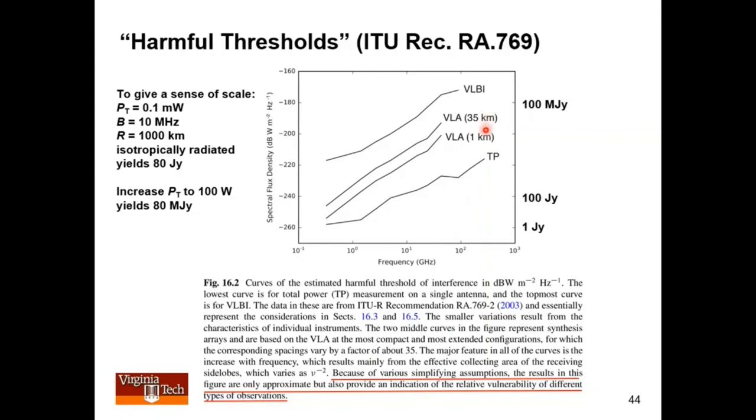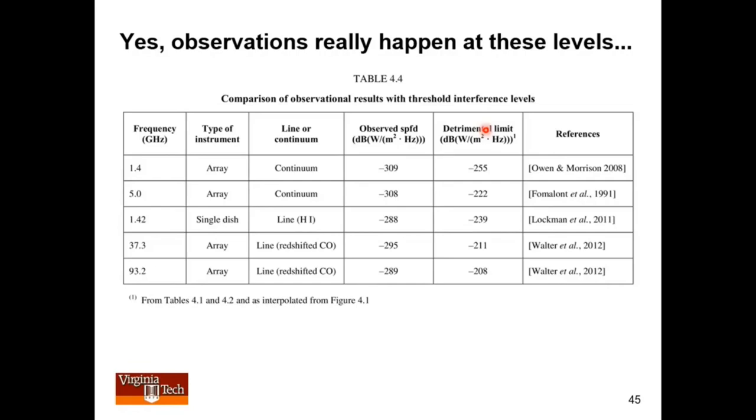Again, I think this is useful for kind of initial feelings about things, but I would warn you about relying on this as a way to authorize, for example, the use of a system. This primary use is to try to understand what the vulnerability is. I should emphasize that observations really do happen at these levels. This is a list of the detrimental limits from the previous slide. These are observations expressed in the same units, but for things that people have done. And I'll tell you, this one here is just tens of micro Janskys. So you can kind of see that people are really observing at levels which are impressive relative to these detrimental limits.